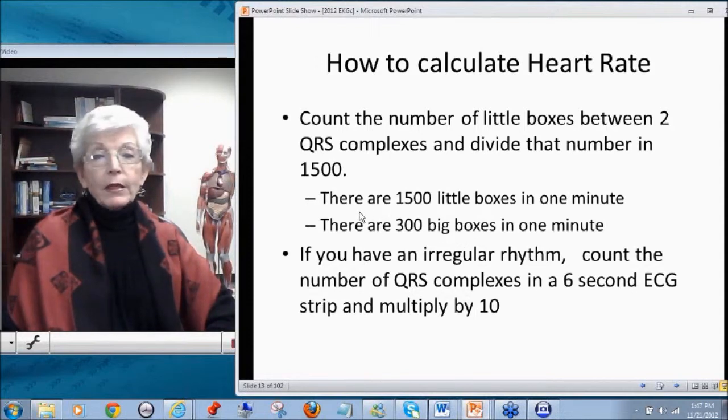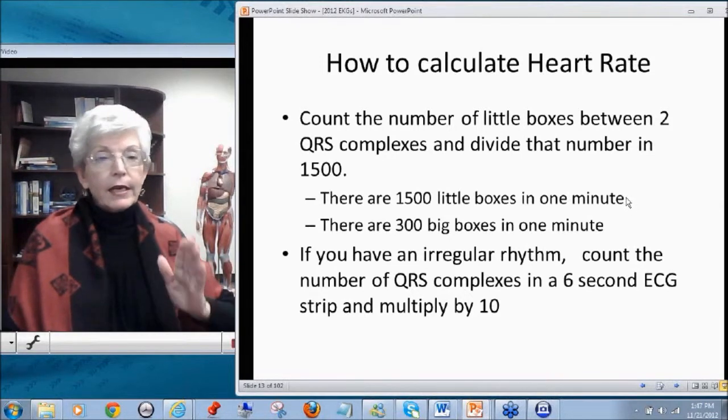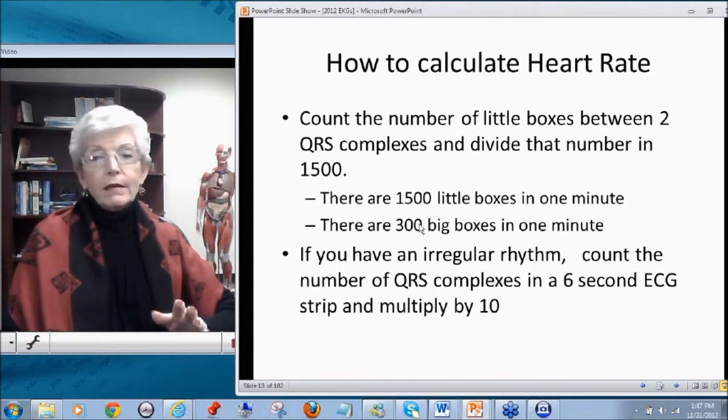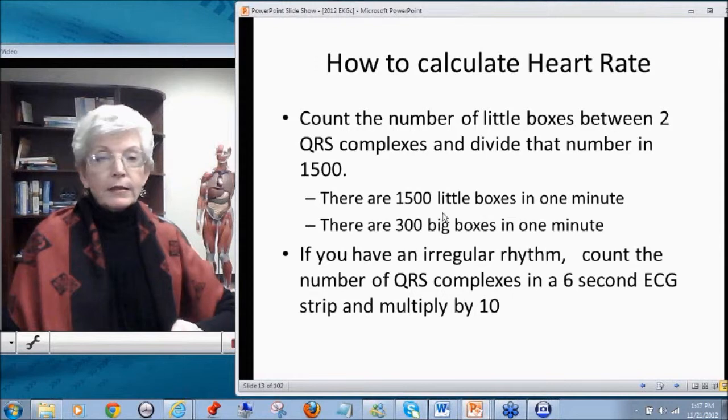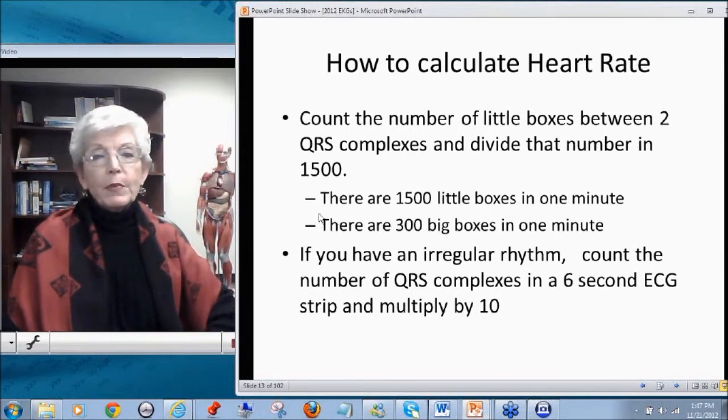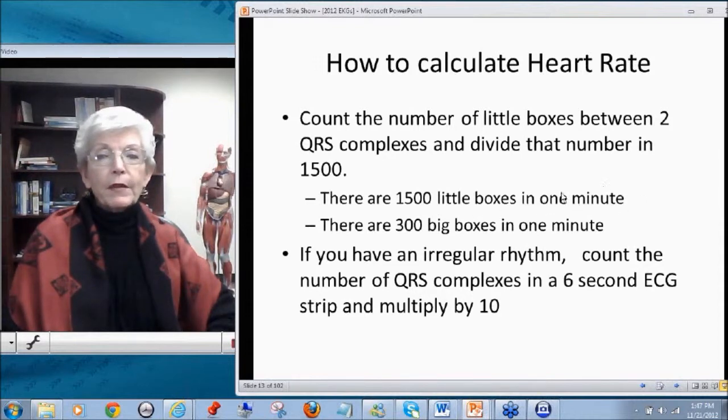Remember, there's five little boxes for every one big box. So 1,500 little boxes and 300 big boxes in one minute's time. The reason I would like you to use the little box method is because it is rare to see a rhythm that highlights on exactly on a big box. It's usually a couple of big boxes and a couple of little boxes in between. And so you get a much better real value if you use this method.